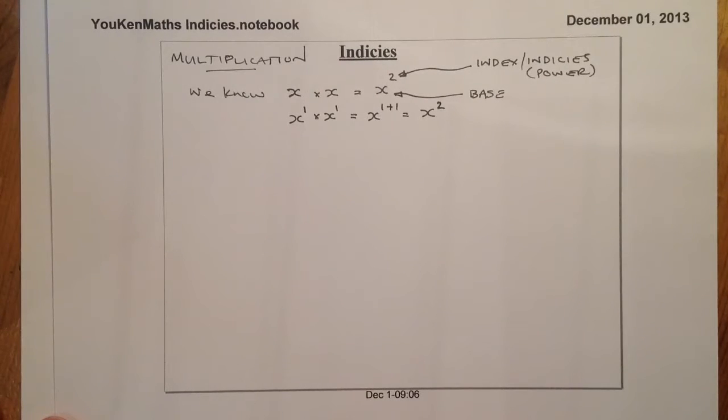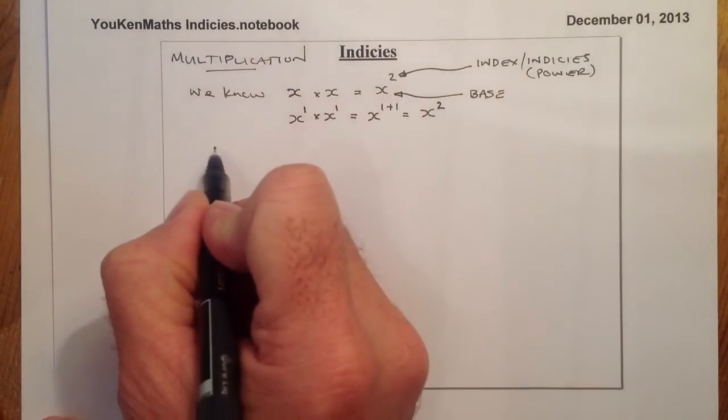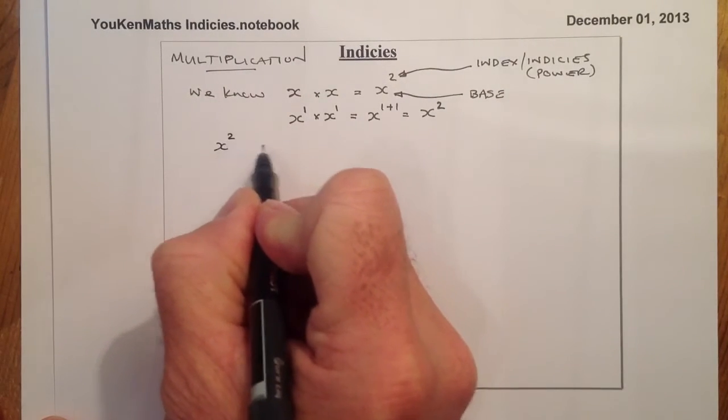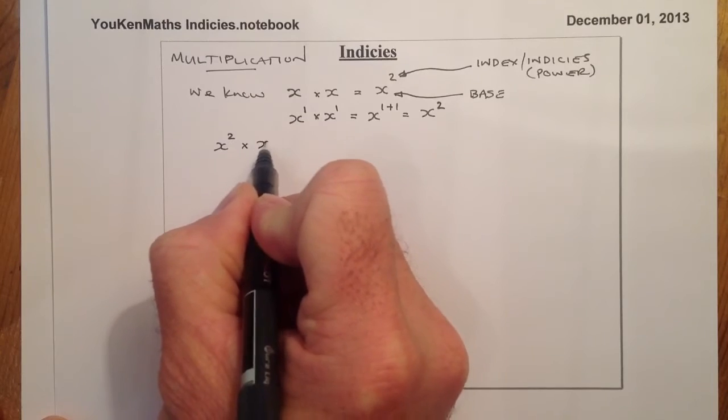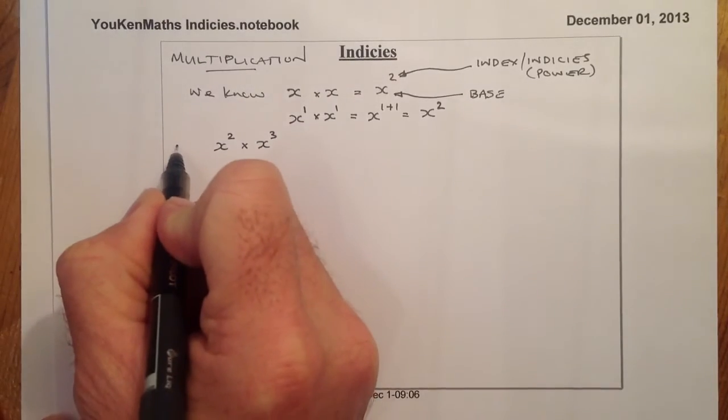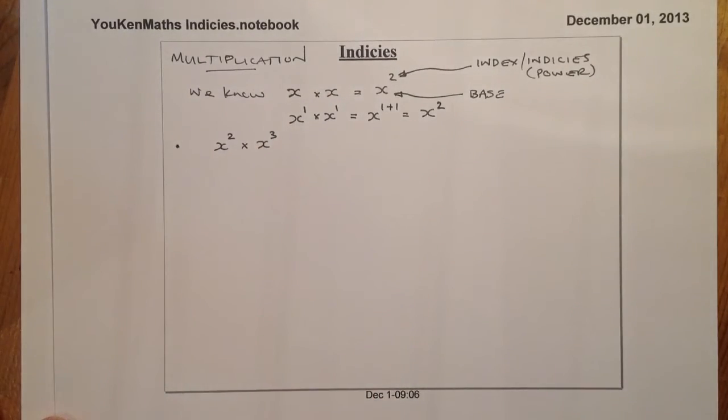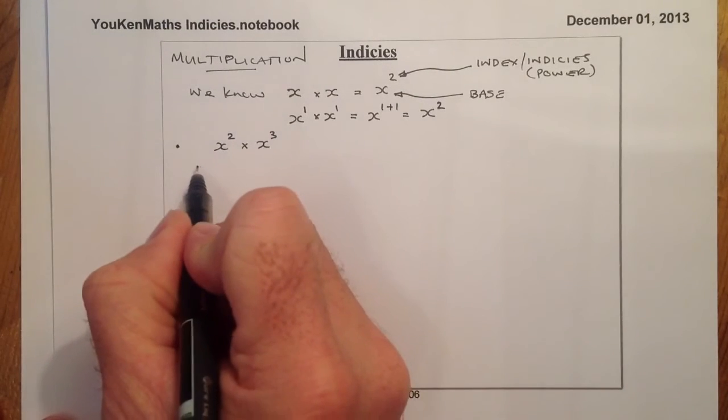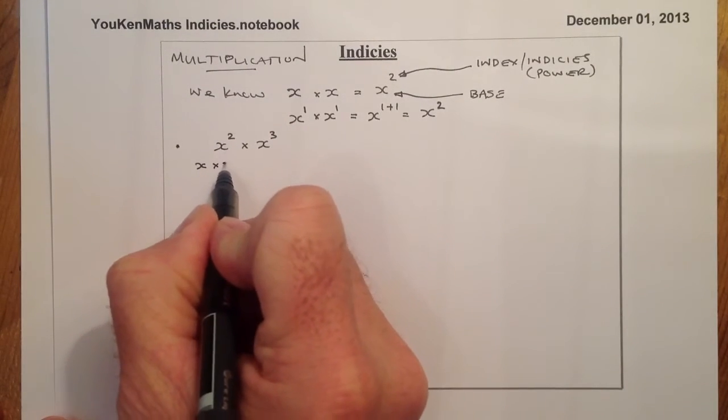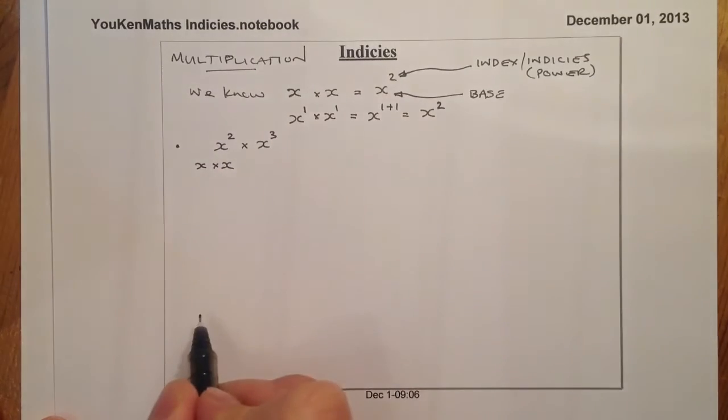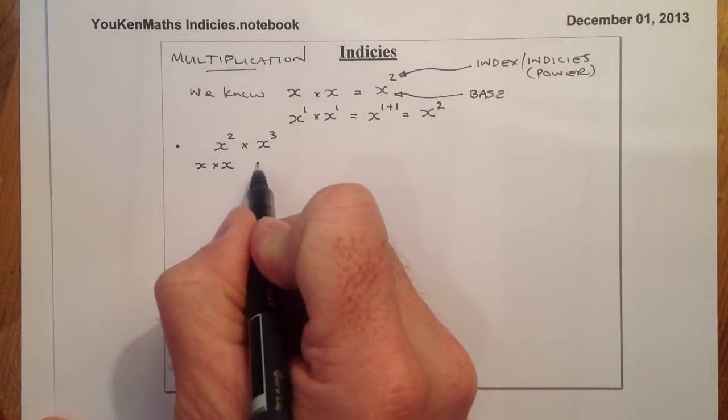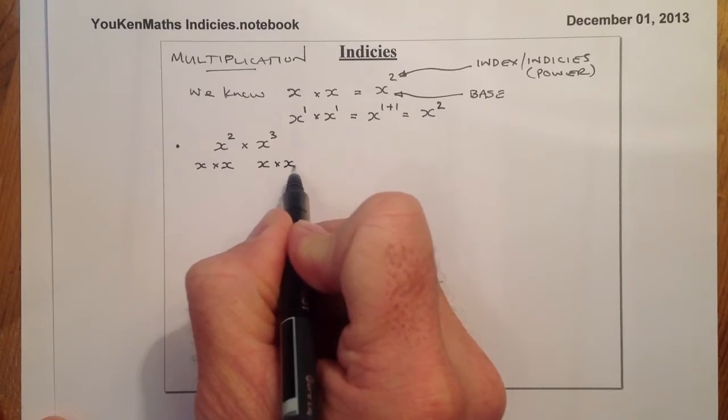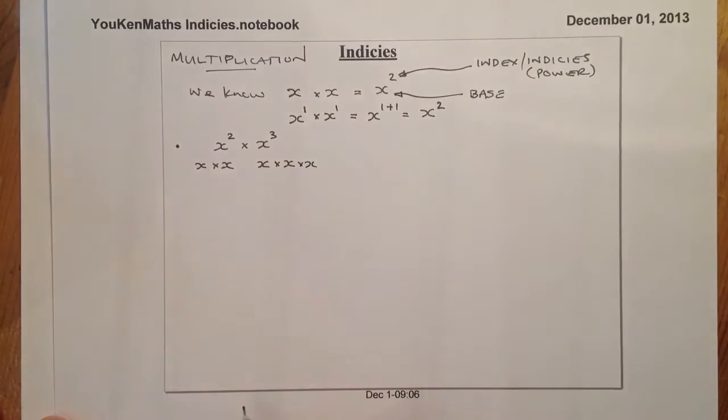Let's see how that works with another example. Let's go for x squared times x cubed. Right, if I write this out in full, what I've got here is x times x for x squared. And x cubed, I've got x times x times x times itself.